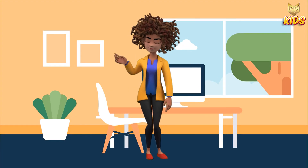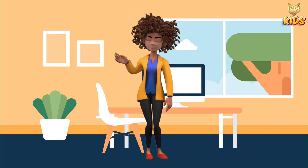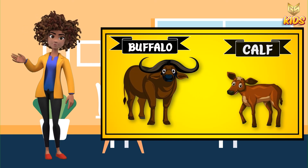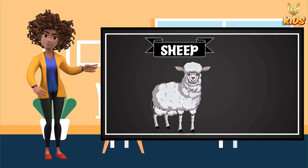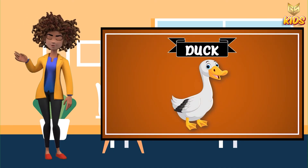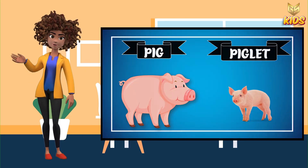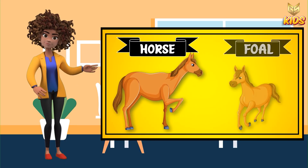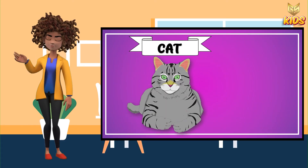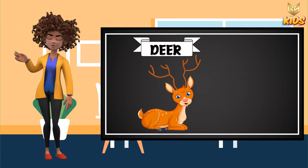So children, have you understood what we have studied so far? Let's repeat from the beginning: cow, calf; buffalo, calf; sheep, lamb; chicken, chick; duck, duckling; pig, piglet; horse, foal; dog, puppy; cat, kitten; and deer, fawn.